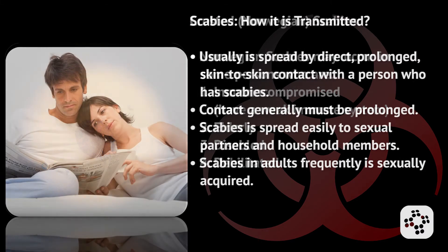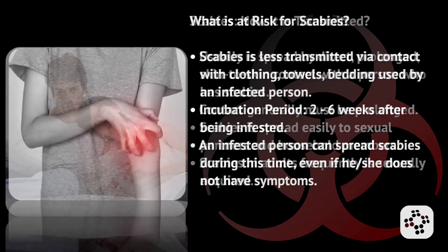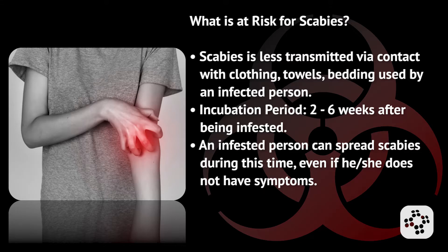So how is scabies primarily transmitted? It is usually spread by direct prolonged skin-to-skin contact with a person who has scabies. The contact generally must be prolonged. Scabies is spread easily to sexual partners and household members. Scabies in adults is frequently sexually acquired, and it is less commonly transmitted via contact with clothing, towels, or bedding used by an infected person.